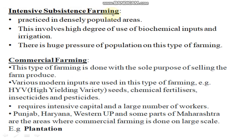Second, we have Intensive Subsistence Farming. This is seen in densely populated areas like Uttar Pradesh and Bihar, where population is high and land is less. It involves high degrees of biochemical inputs. To meet the needs of the large population, heavy use of biochemical inputs and more irrigation is done to improve production. There is a huge pressure of population on land in this type of farming.